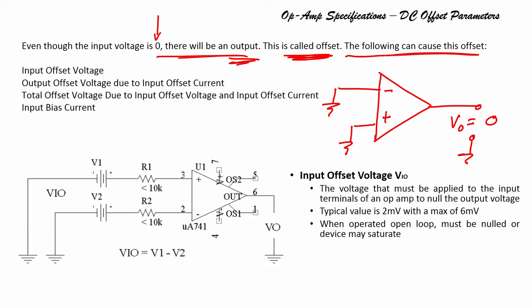The following can cause this offset: first is input offset voltage, then output offset voltage due to input offset current, and total offset voltage due to both input offset voltage and input offset current, along with input bias current. These are all the parameters that will cause an offset.